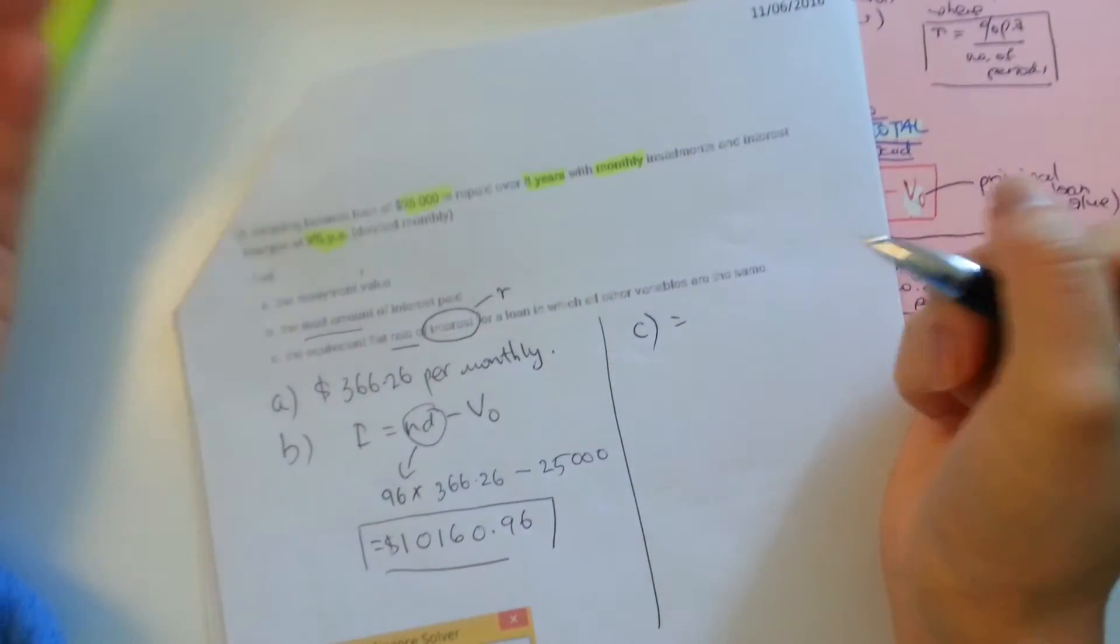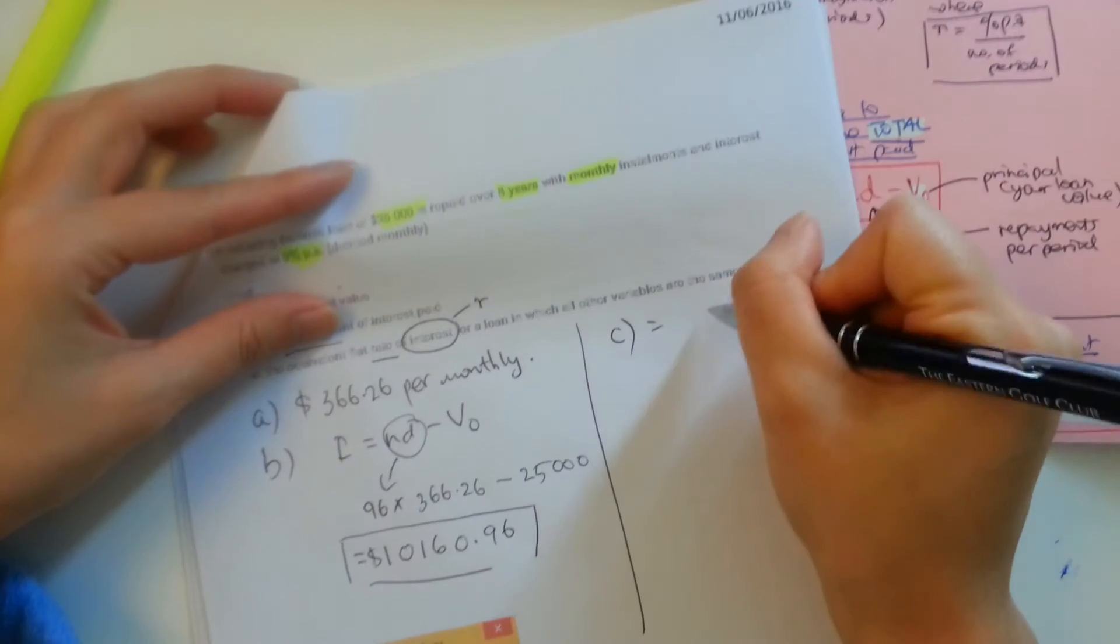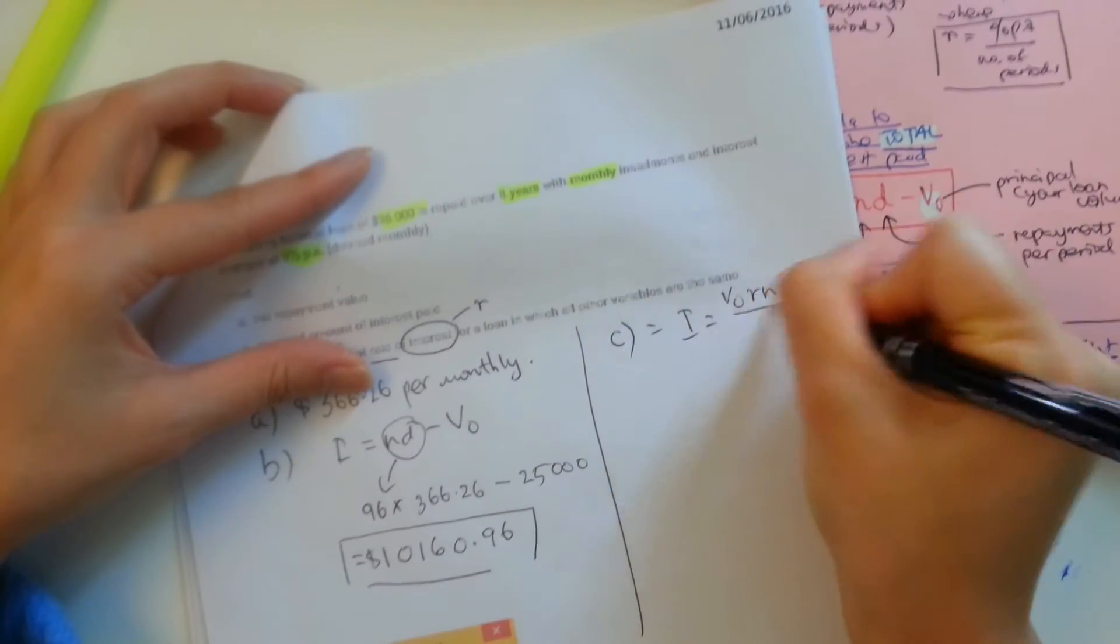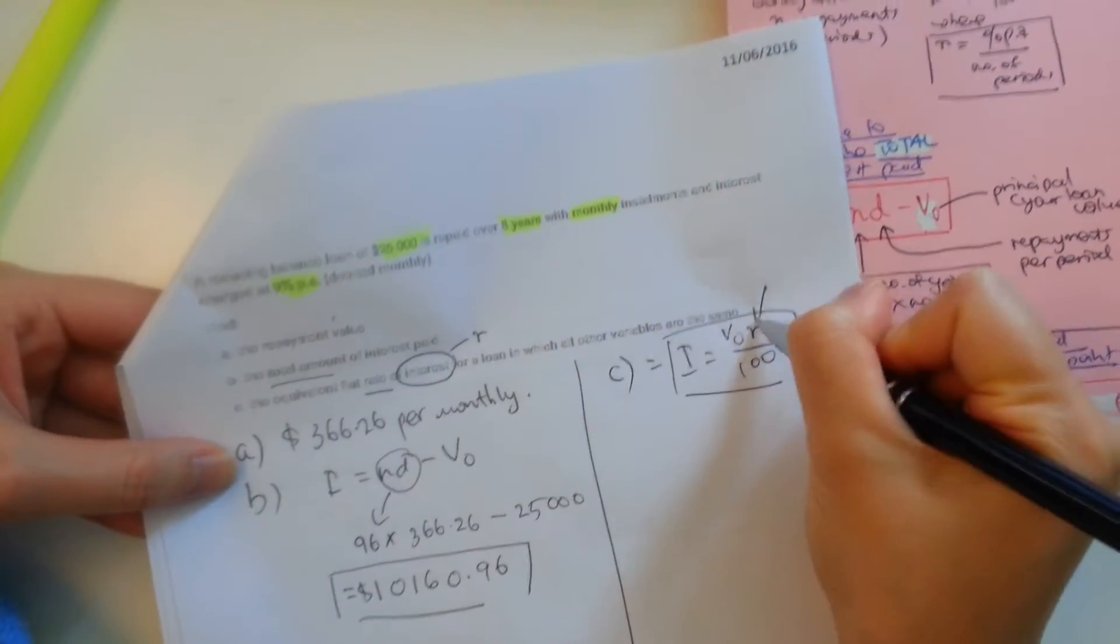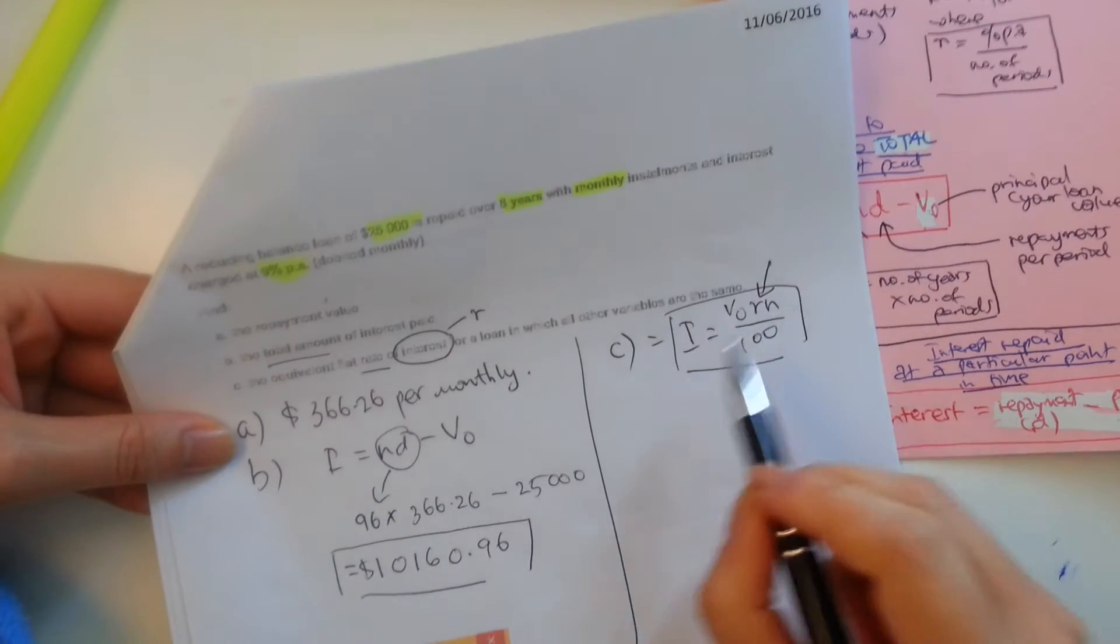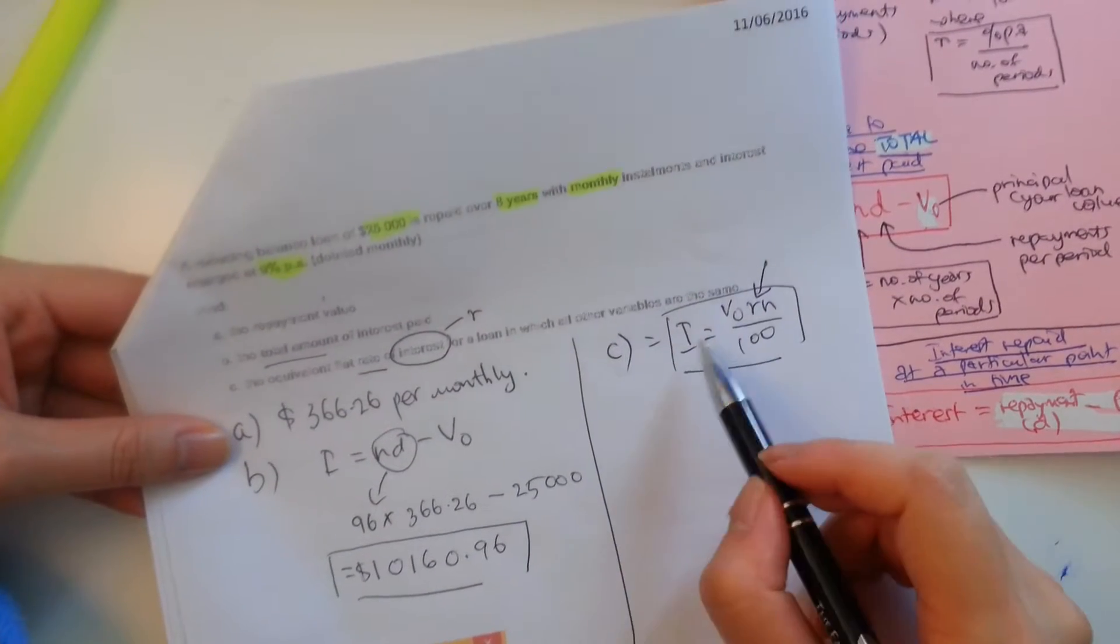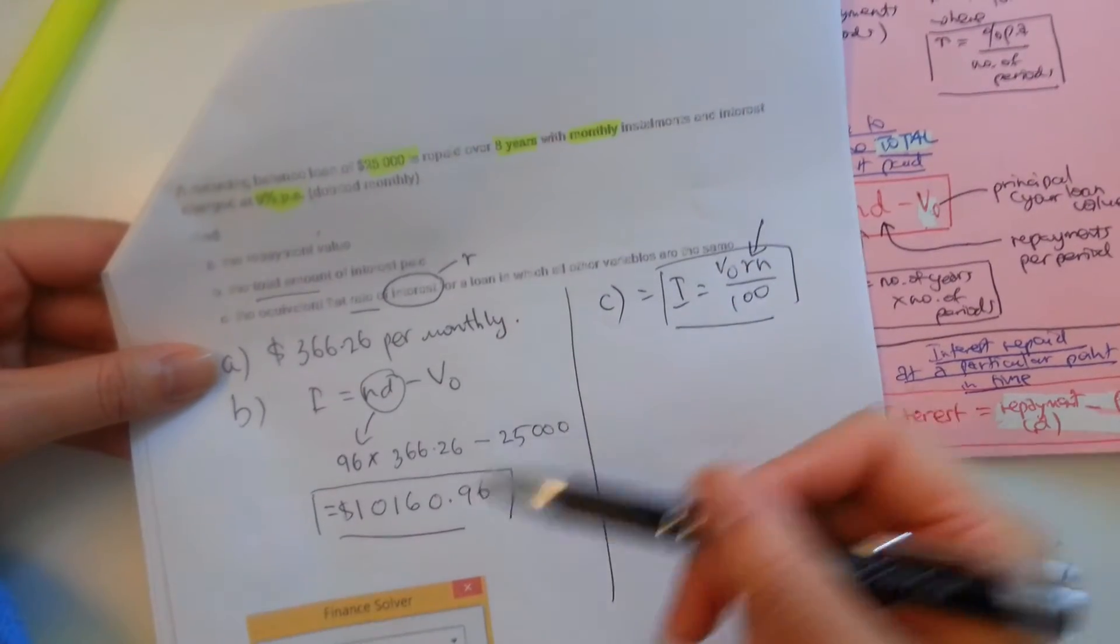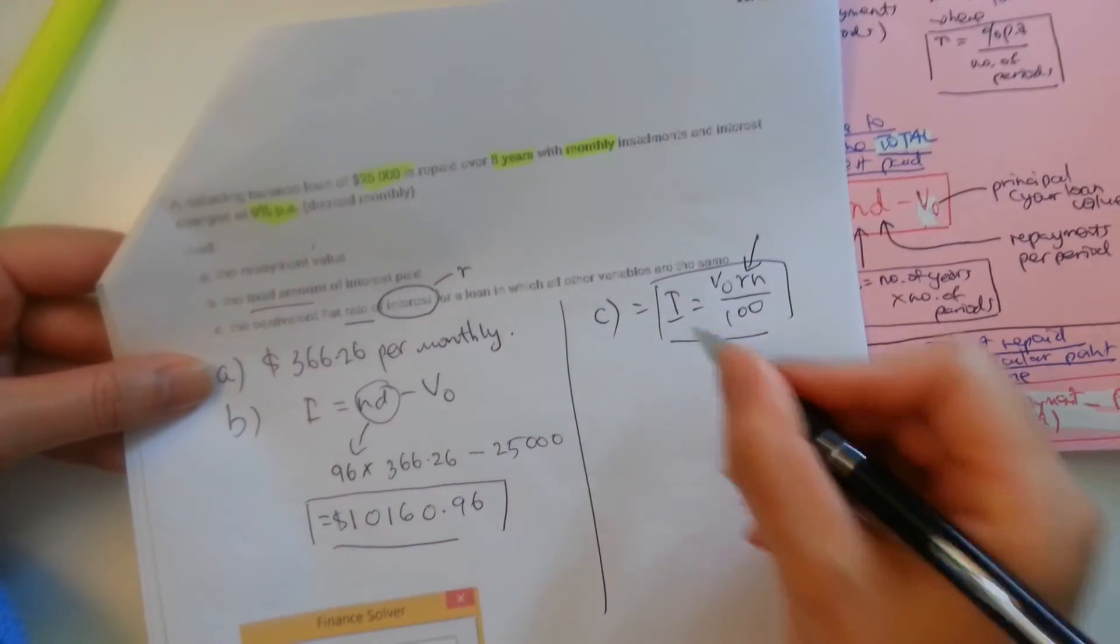So C, if it's talking about flat rate interest, we're going to be using the flat rate interest formula. I is, okay, so here's our formula and we are aiming to look for R. So if everything stays the same, we're going to have to input all our other variables. So we need to know what I is, V0 and N is, which we do from our previous calculations.